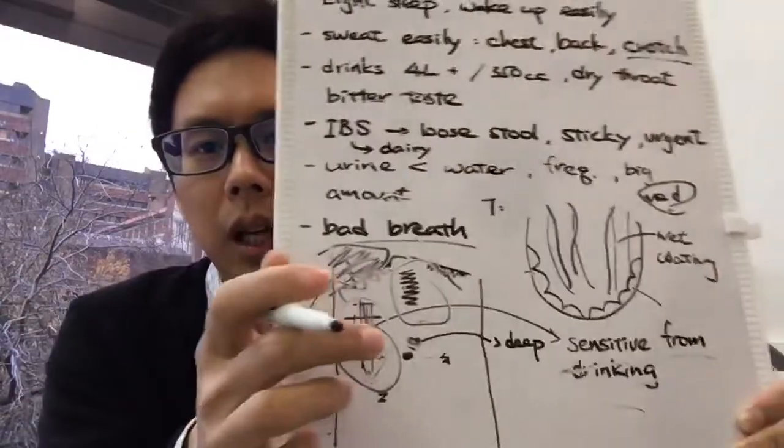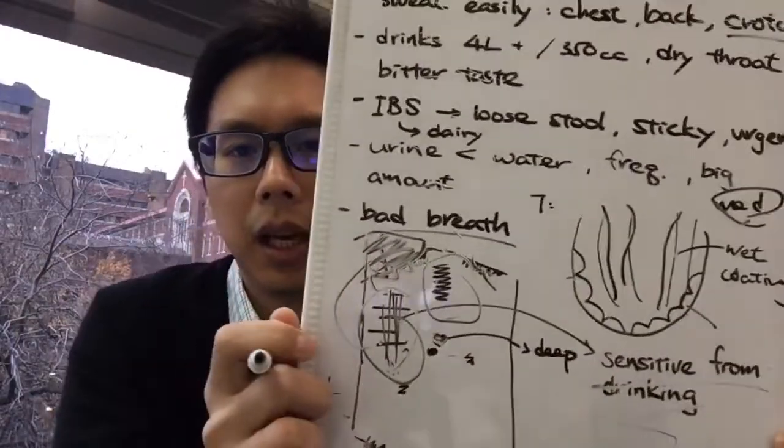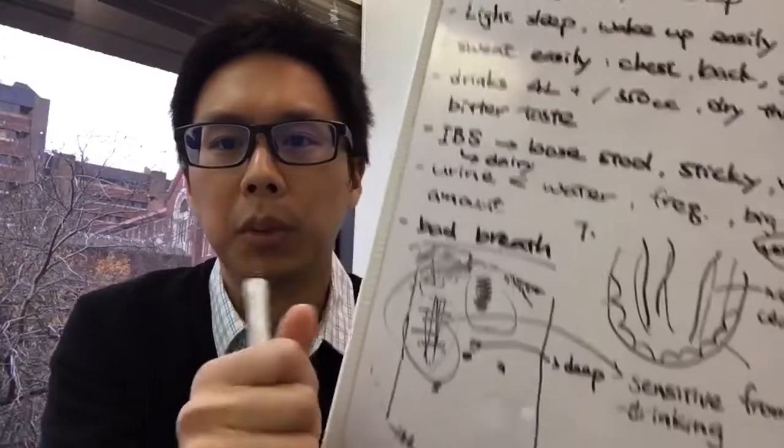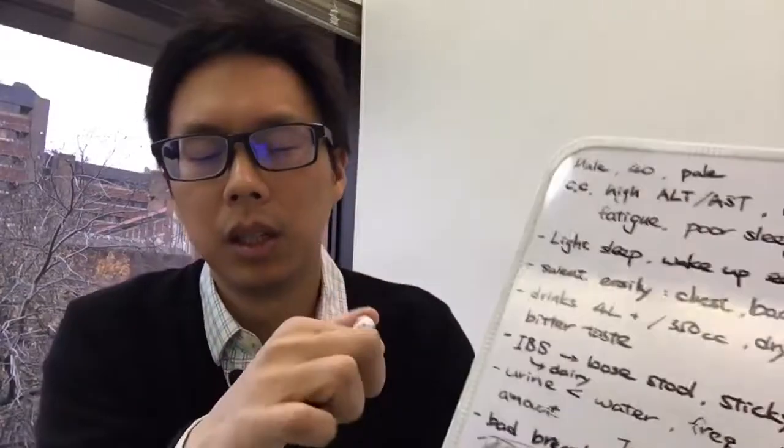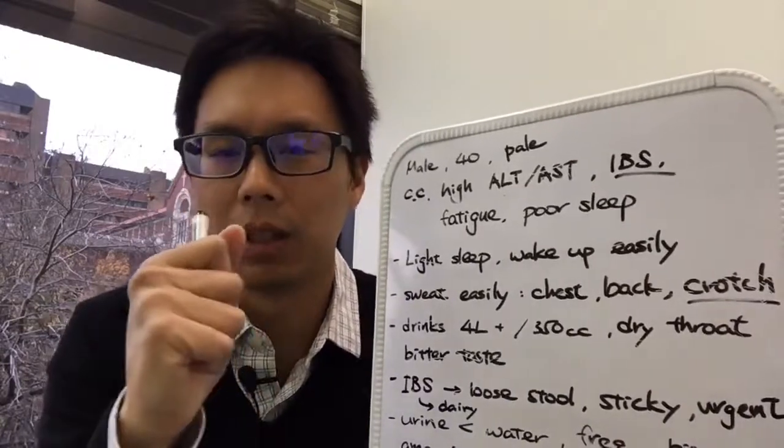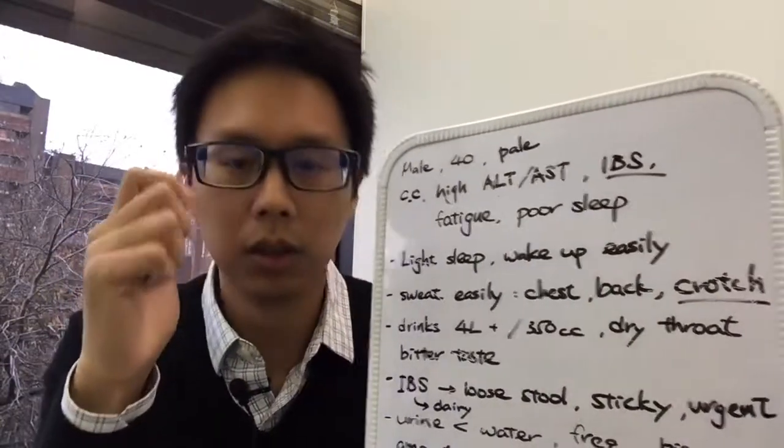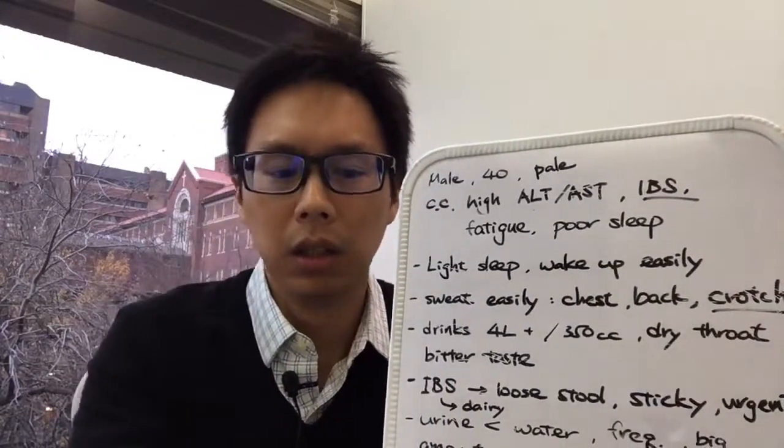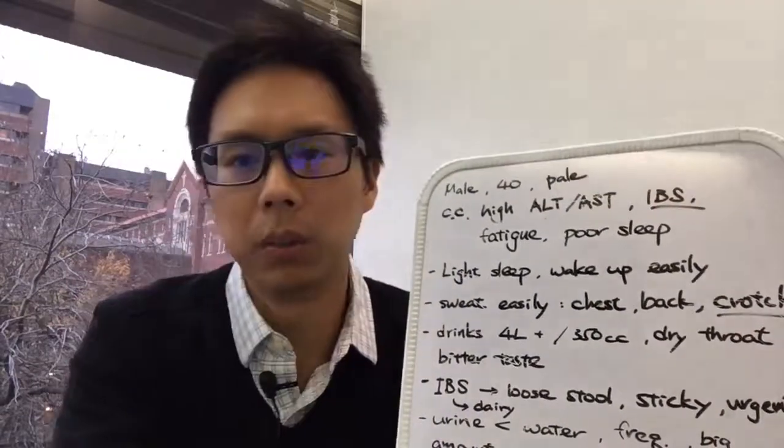He had a history of a panic attack when he was about 25, 26 years old. When he had the panic attack, he felt like his heart was racing, was beating very fast, heart was pounding. So there's a history of a heart issue or heart weakness.